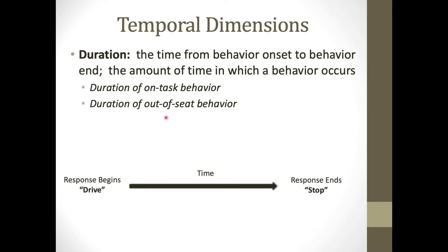We don't simply use duration in isolation for one instance; we measure it repeatedly. One instance of out-of-seat behavior may have occurred for 10 seconds, the next for 30 seconds — and within a defined observation time, we calculate a percentage. Using a count alone might not represent what's truly occurring: a student who got up only four times in a day but was out of his seat for five to ten minutes each time gives a very different picture.